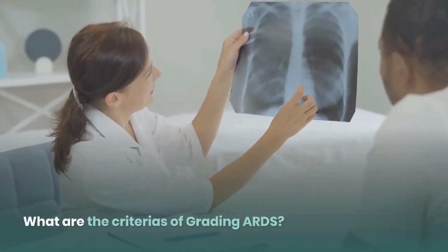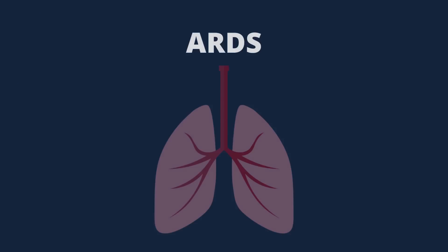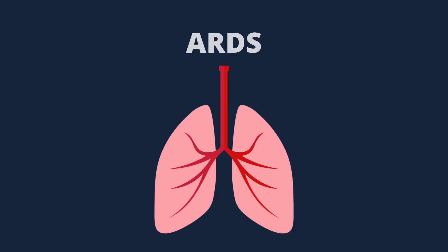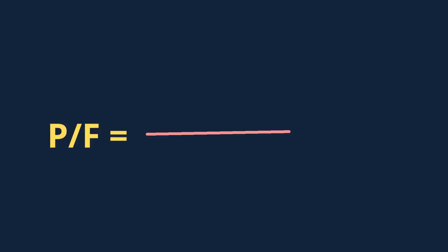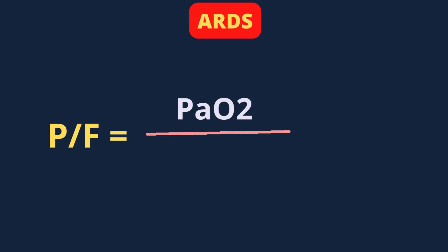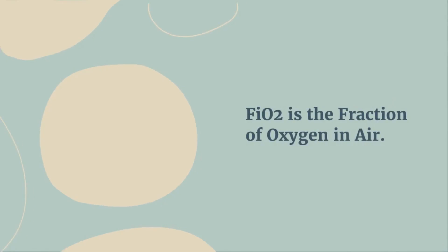So how is hypoxemic respiratory failure classified? What are the criteria for grading ARDS, or acute respiratory distress syndrome? Let's understand the significance of ABG in the diagnosis of ARDS with a few examples. We grade ARDS into three types: mild, moderate, and severe. There is a formula for identifying ARDS severity — the P/F ratio — which equals PaO2 from the arterial blood gas divided by FiO2, or the fraction of oxygen delivered to the patient.